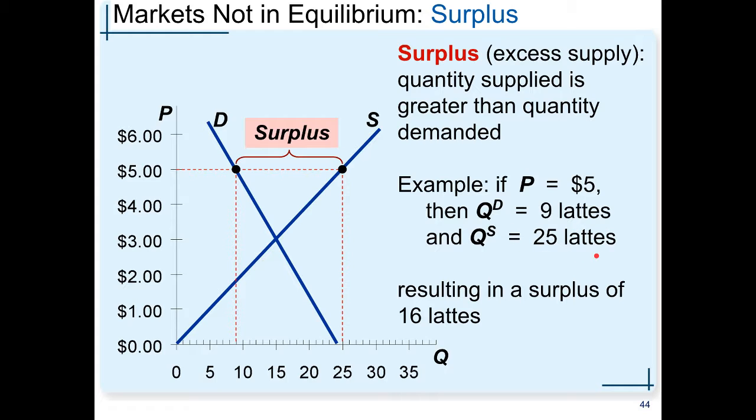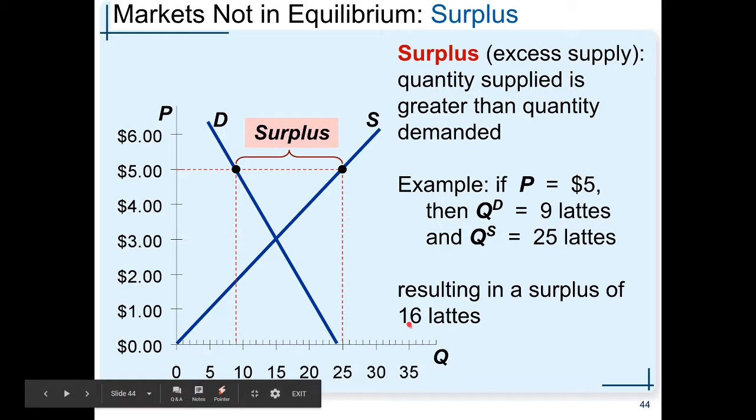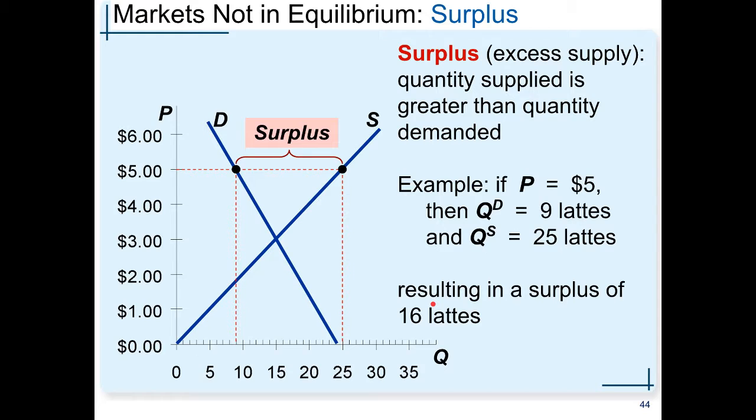In this example, sellers want to sell 25, but consumers only want to buy 9. Supply exceeds demand by 25 minus 9, which is 16. We say that in this market of lettuce, there are 16 units of excess supply because supply exceeds demand by 16 units.